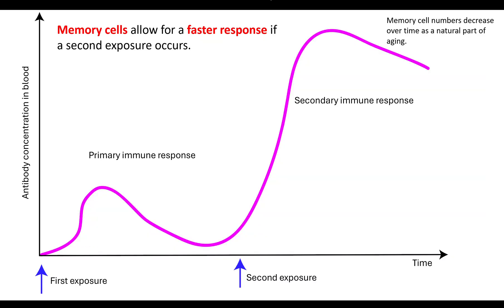Let's take a step back and remind ourselves about the specific immune response. The first time you have an exposure to a pathogen, you are going to have to go through clonal selection and then clonal expansion, and we have this increase in our antibody concentration in the blood. This is known as our primary immune response.